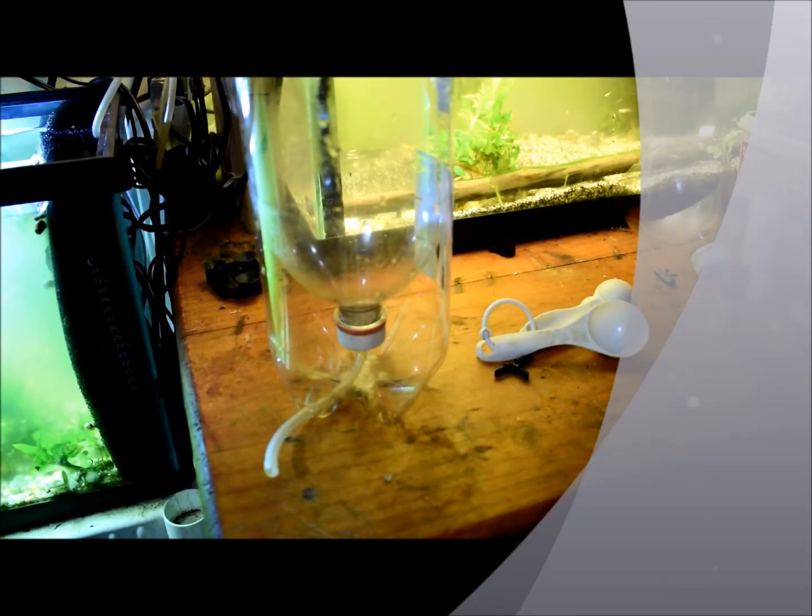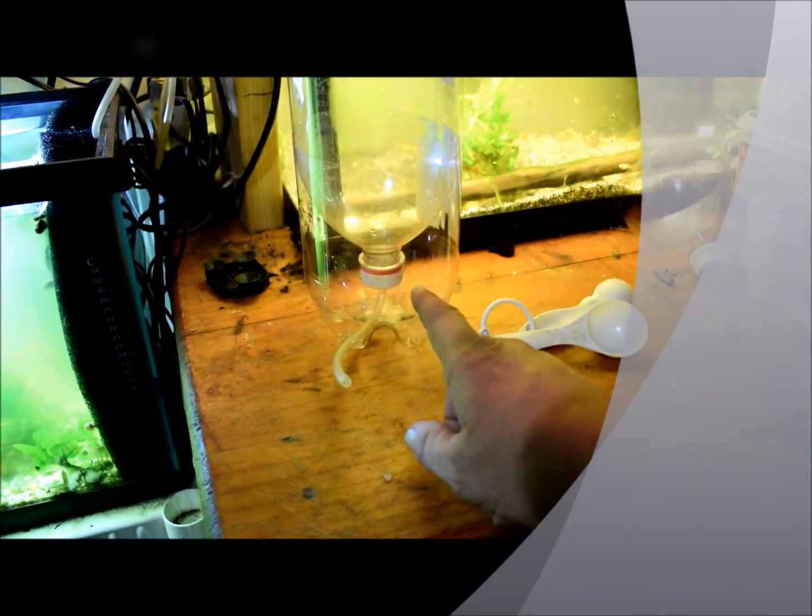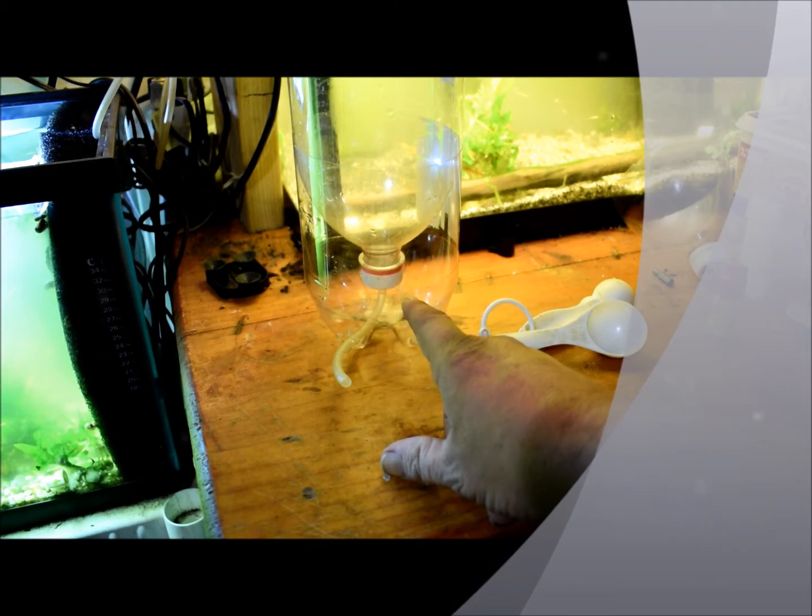Yep, I'm at it again. We're just going to make some DIY brine shrimp hatcheries. We've got a drilled hole in our cap, we're going to silicone that because I got a drill bit that's a little bit big, so we ain't going to be using that.